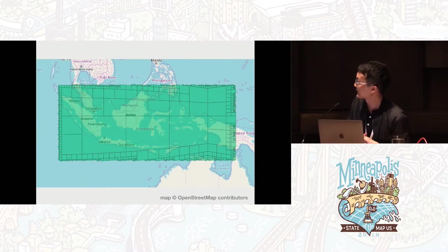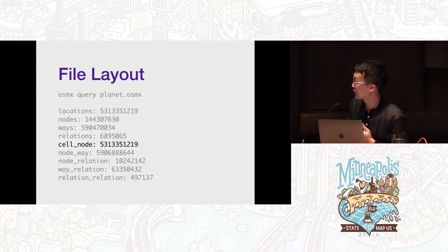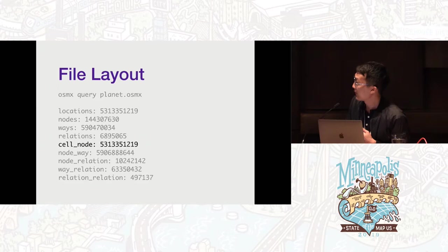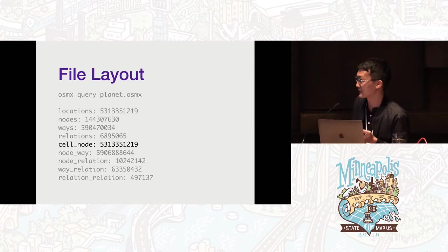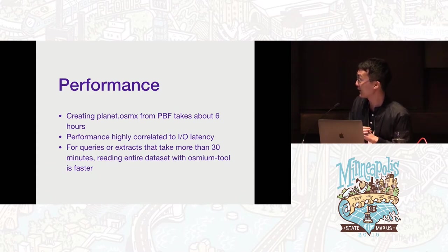How this is stored in the database: you're storing a map from that level 16 cell to all the nodes that belong in that cell. The spatial indexing is done only over nodes.